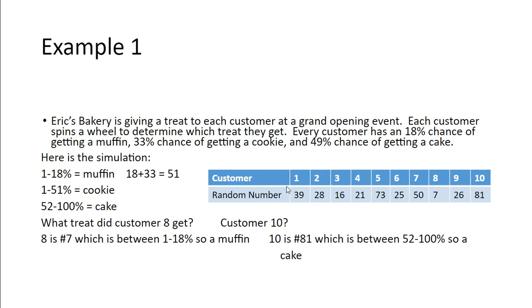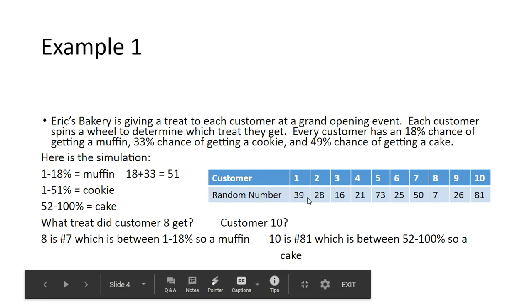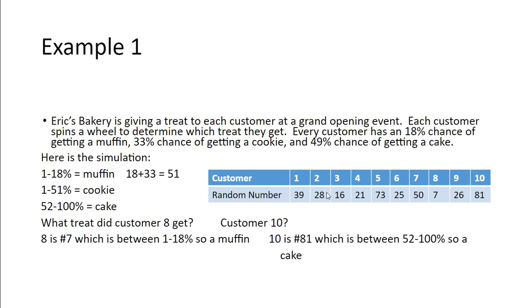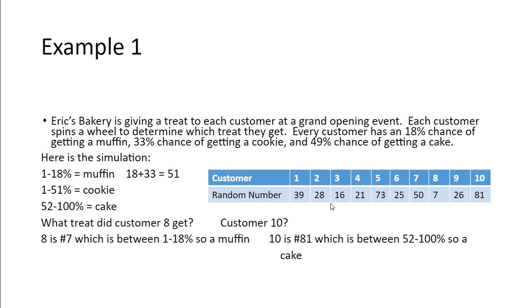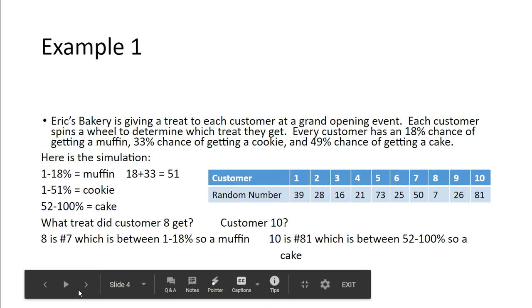And we could do that for every single one of these. Customer 1 is at 39, which falls in between 1 and 51, so they would get a cookie. Customer 2 at 28, that's also in between 1 and 51, so they would get a cookie as well. So that's kind of what you do. You set up these ranges with percentages using the three descriptions to tell you what would then happen in the simulation. These aren't actual results, necessarily. They're just random numbers that are thrown out there to show what would happen.